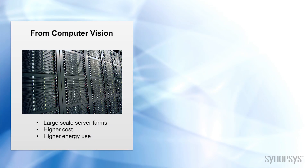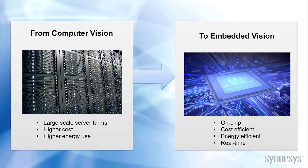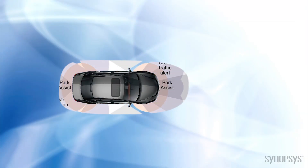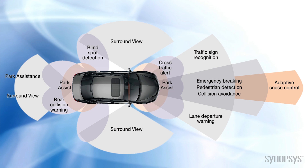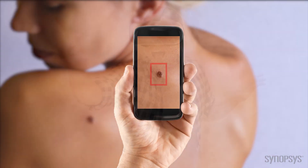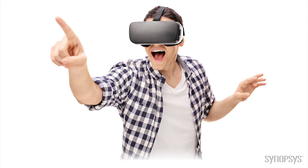Only recently has semiconductor technology advanced to the point where powerful, yet low-cost, and energy-efficient processors are available to execute these complex computer vision algorithms on embedded systems in real-time. These technological advances are leading Embedded Vision into an exciting future, where self-driving cars can see where they are going, medical devices recognize cancerous growth, and augmented reality goggles can place your favorite Pokemon in your living room.